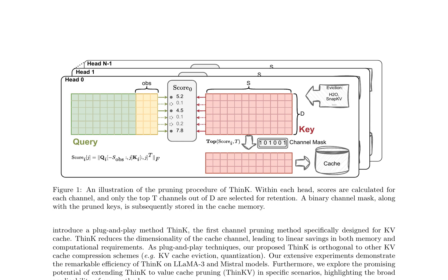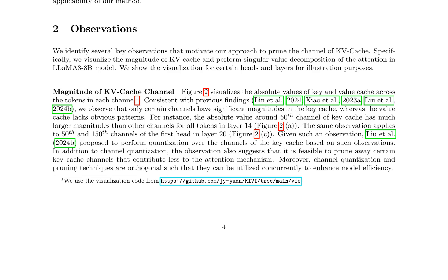This work pioneers the investigation into the sparsity structure of channels in the KV cache. Specifically, we discovered that the activated key cache is sparse given a specific query. This insight allows us to prune the key cache channels using a query-induced norm. We introduce a plug-and-play method THINK, the first channel pruning method specifically designed for KV cache. THINK reduces the dimensionality of the cache channel, leading to linear savings in both memory and computational requirements. THINK is orthogonal to other KV cache compression schemes, e.g., KV cache eviction and quantization.